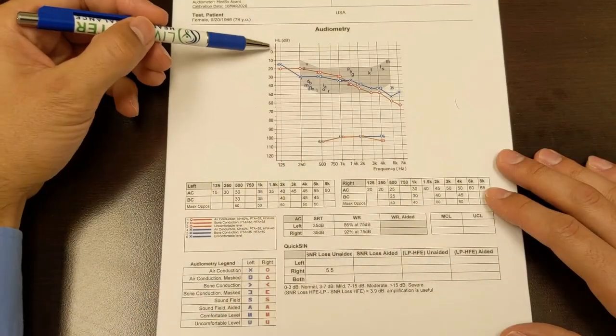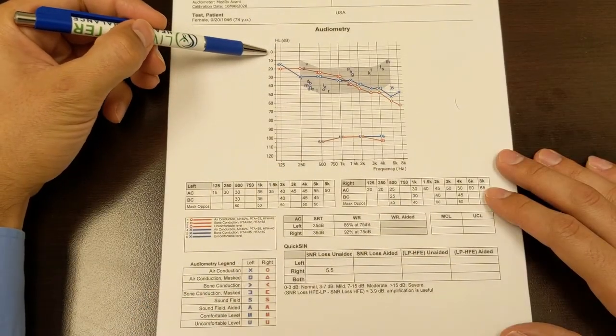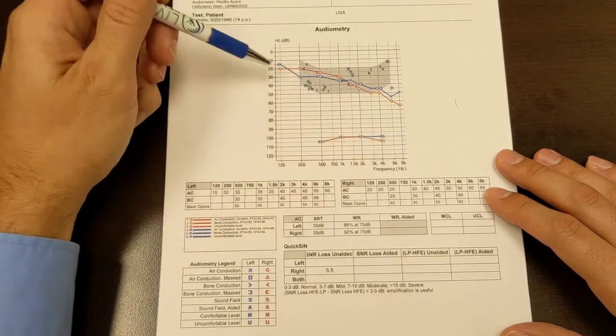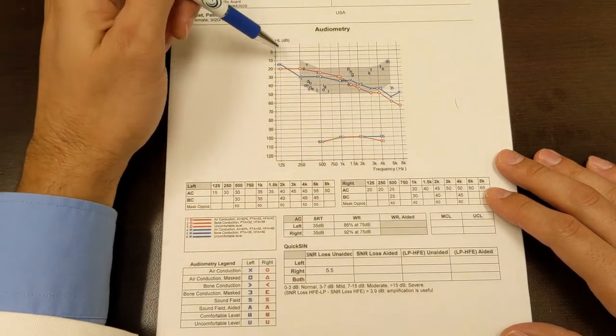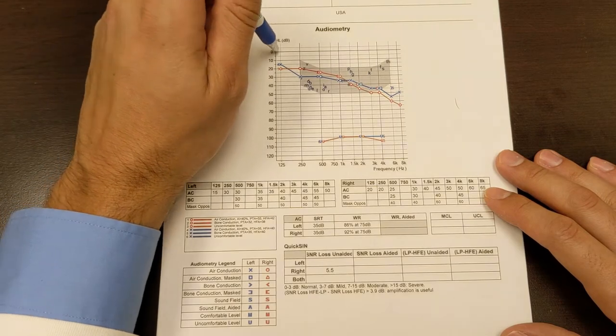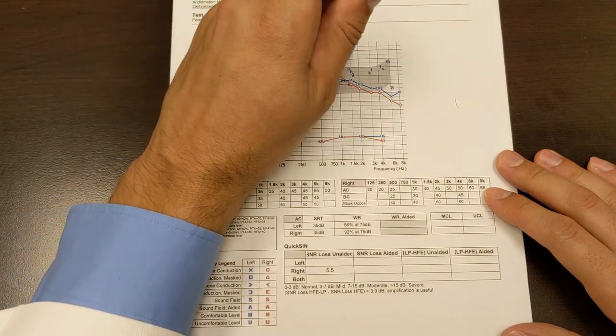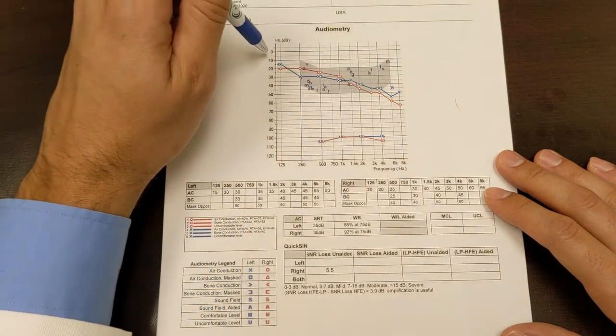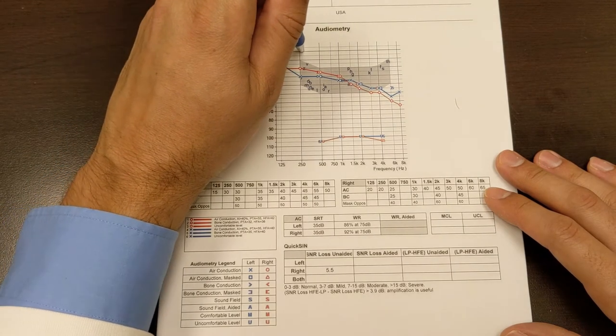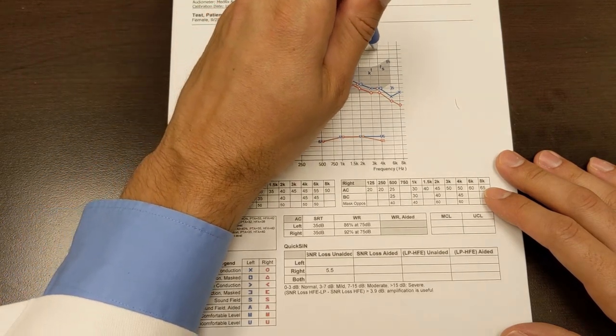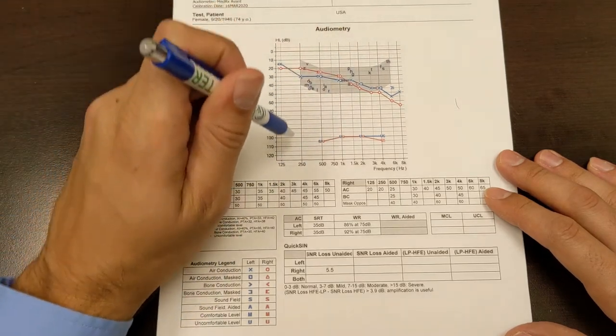So you can see there's a zero mark here on this graph. Zero means that you have normal hearing. And so you can see there's a line spanning all the way across. Your marks on the zero line mean that you have normal hearing across all the different frequencies.